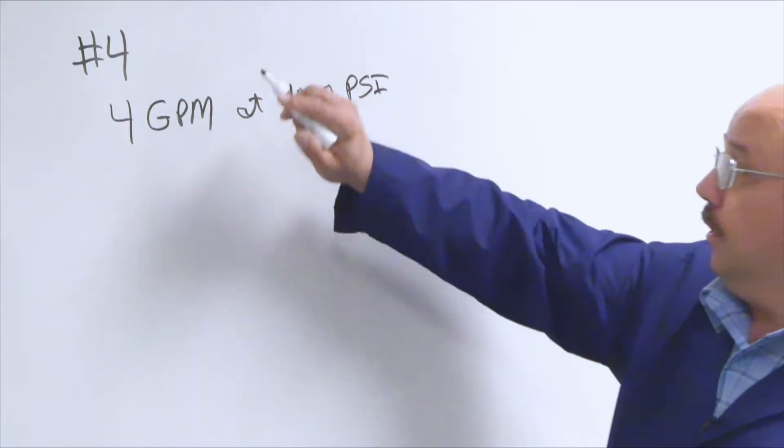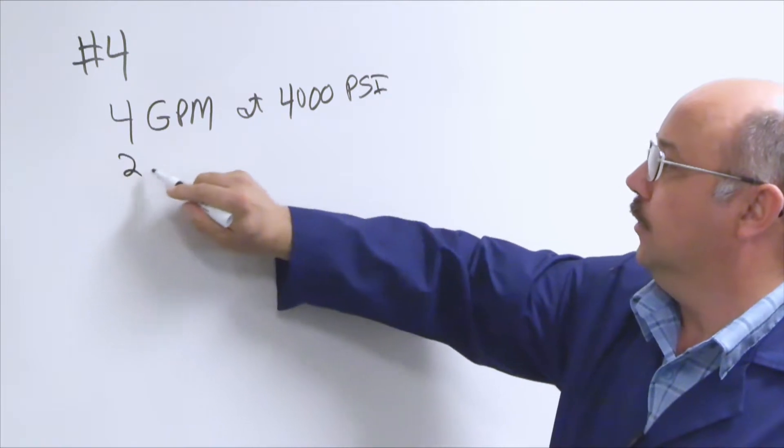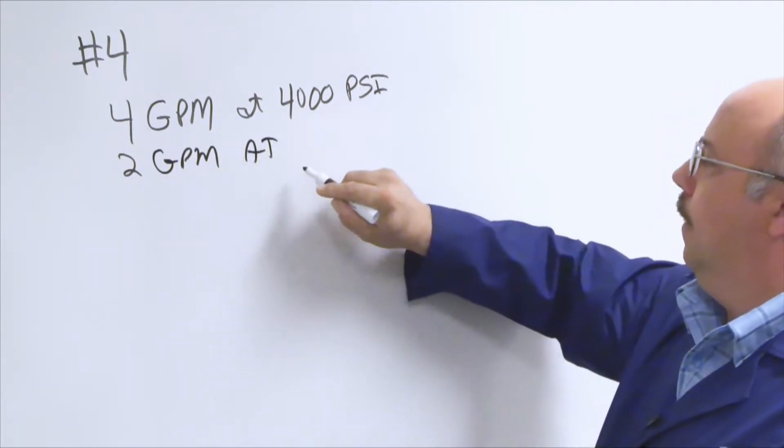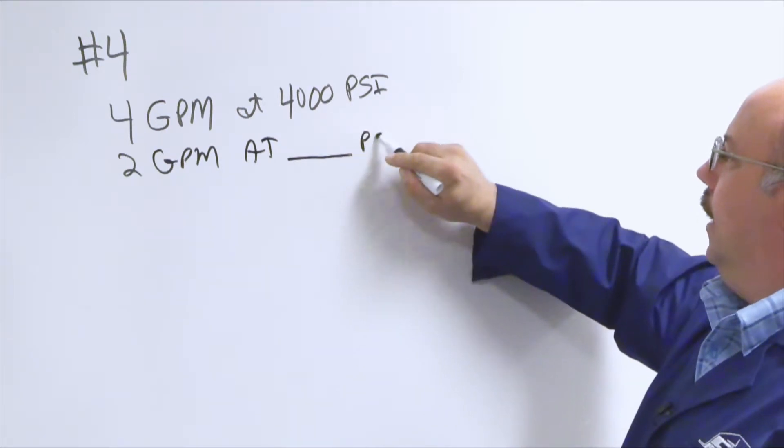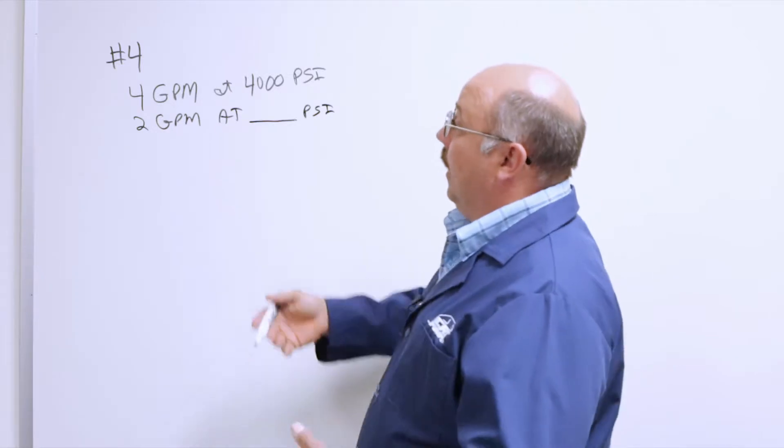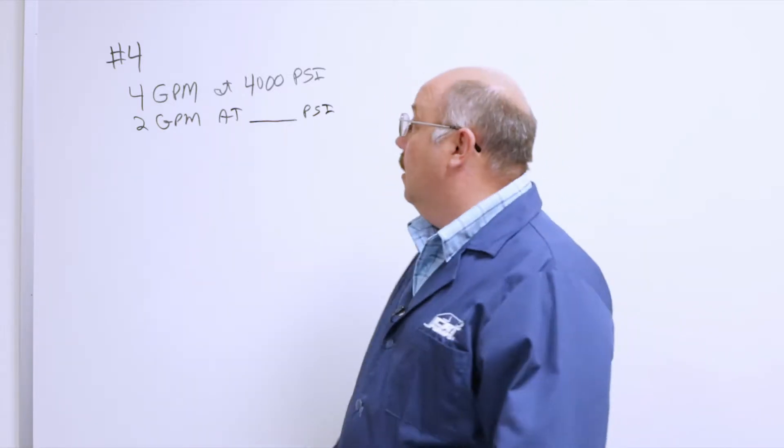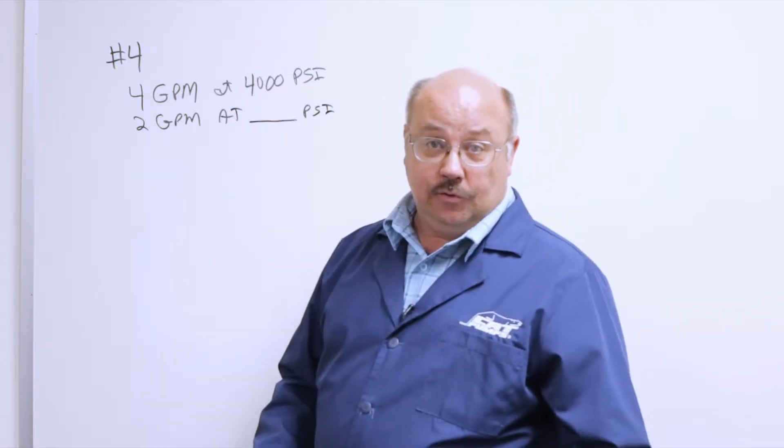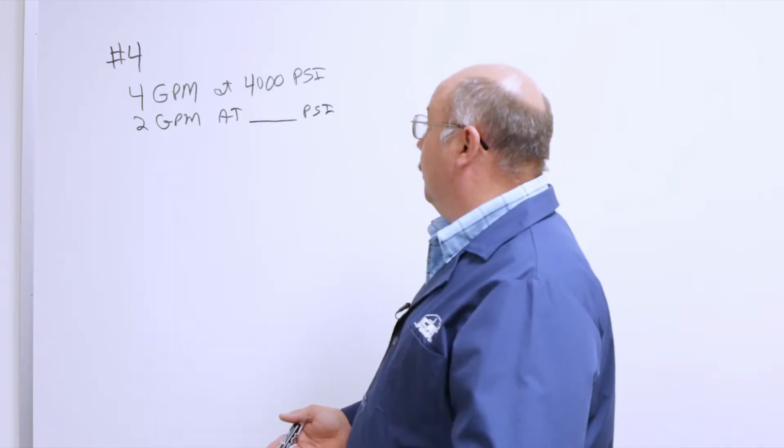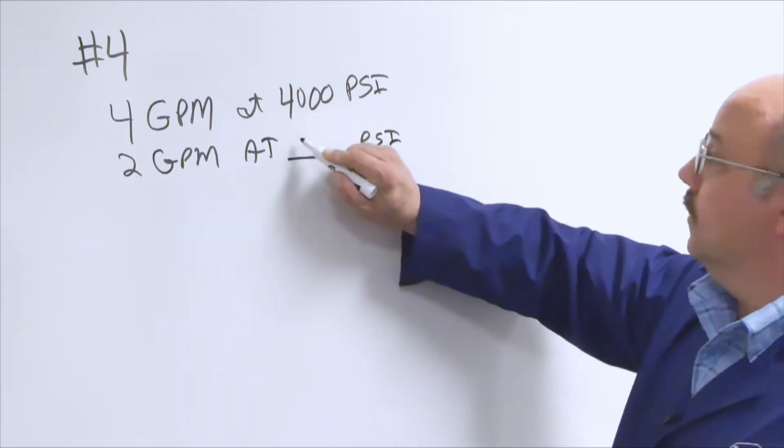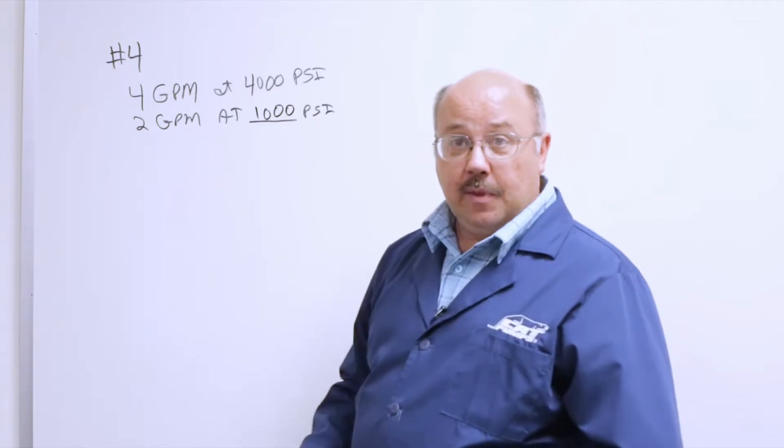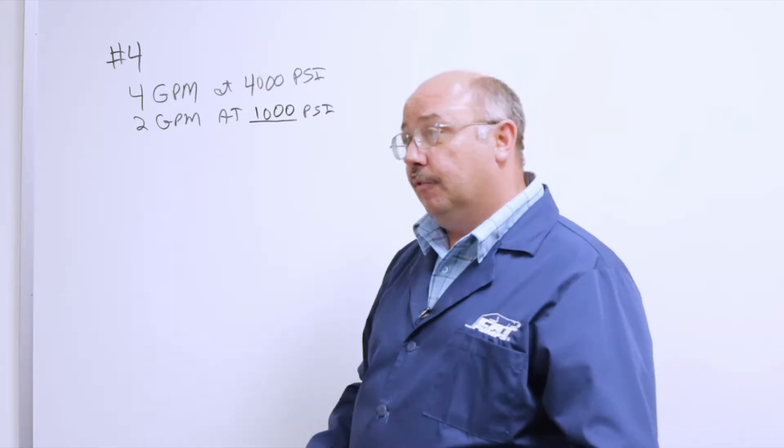So if I were to drop the flow on a number four nozzle to two GPM, what pressure would we have? One wants to think that it would be 2,000 psi because we got half the flow. But that actually is not true because it's a squared function the way the water goes through the nozzle and has a pressure drop. So the right answer is 1,000 psi.